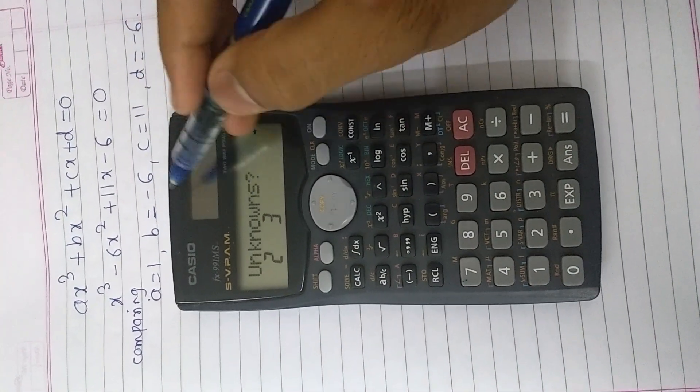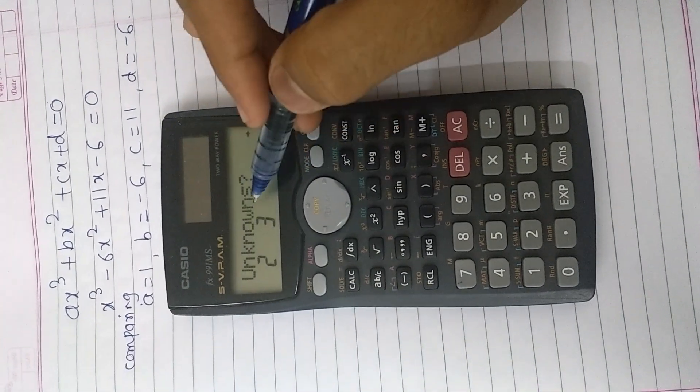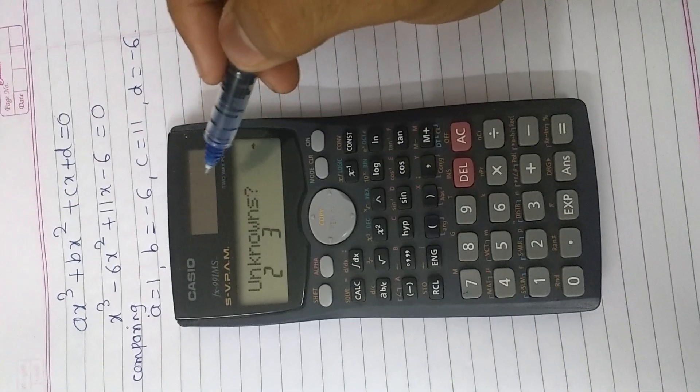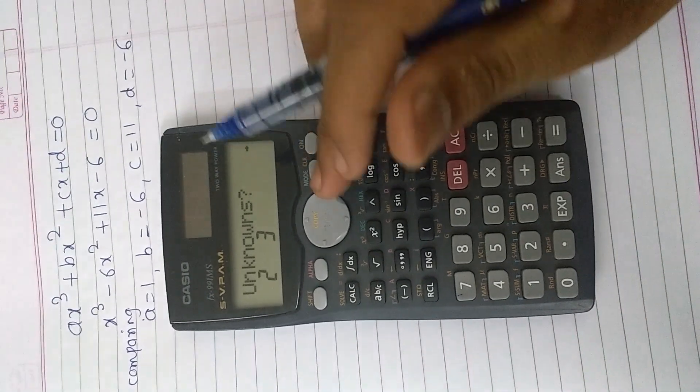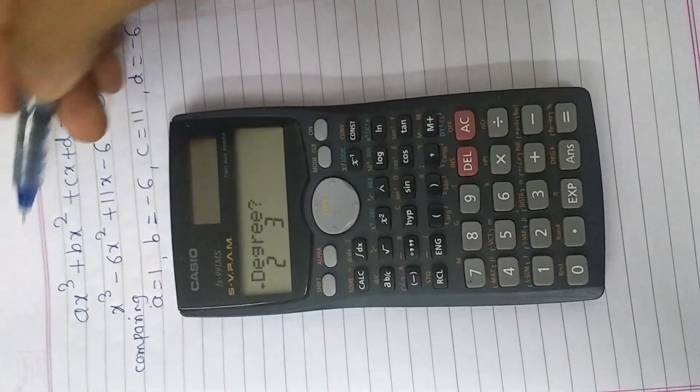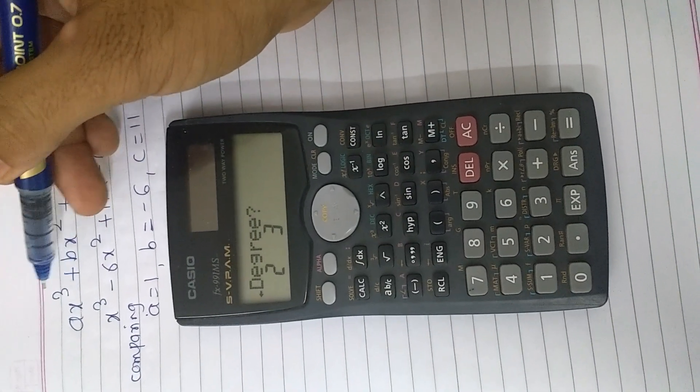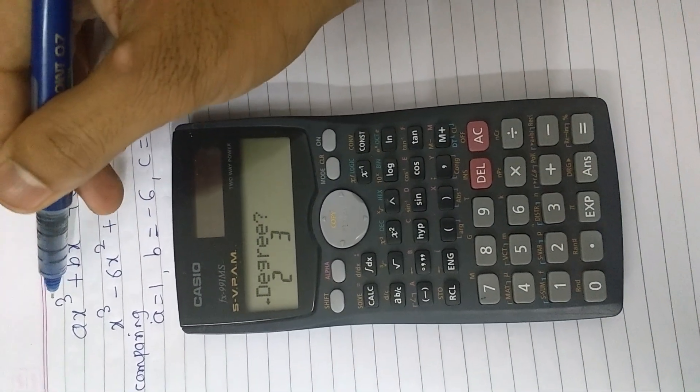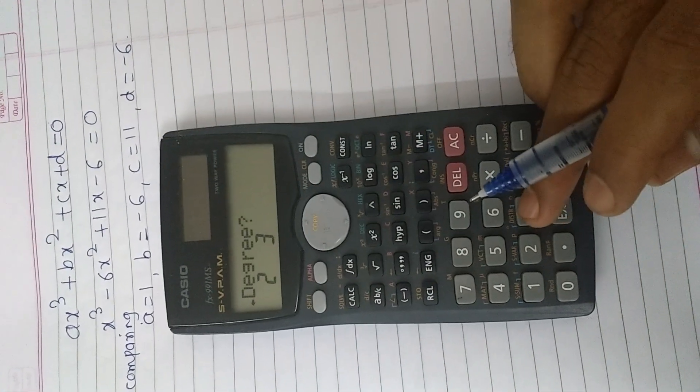Then we will see unknown question mark 2, 2, 3. But our interest is to choose the degree 3. Therefore scroll on right. Then we will see degree 2 or 3. Here our equation is cubic equation that is of degree 3. Therefore we are pressing 3 button.